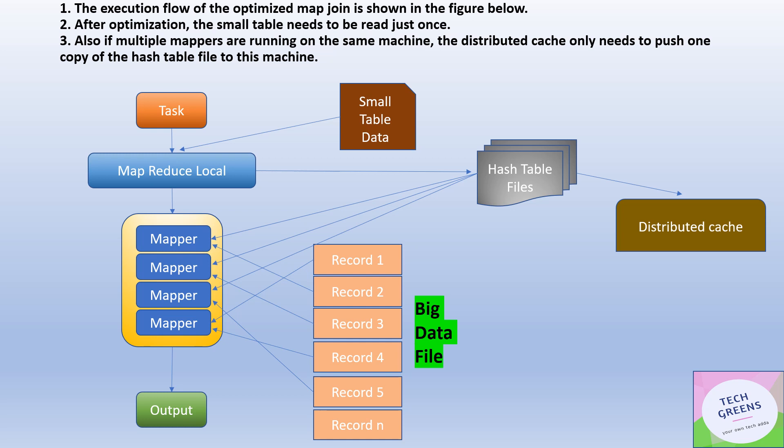There is no reducer stage here — and because there is no reducer, we also do not require shuffling. We save a lot of time by eliminating the shuffle phase, which performs the heavy lifting of sorting and merging. The smaller data is available in the local cache of the mapper, so there is no remote lookup, no overhead of serialization to send data across, and no sorting and merging of the data.